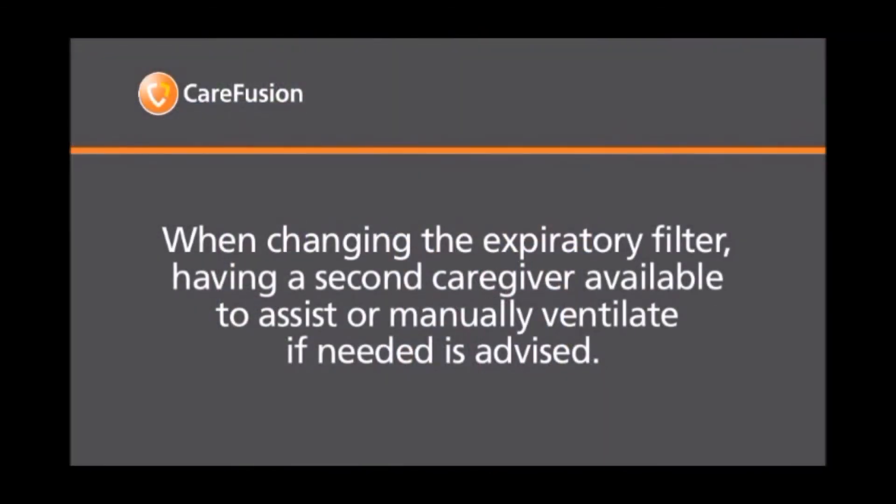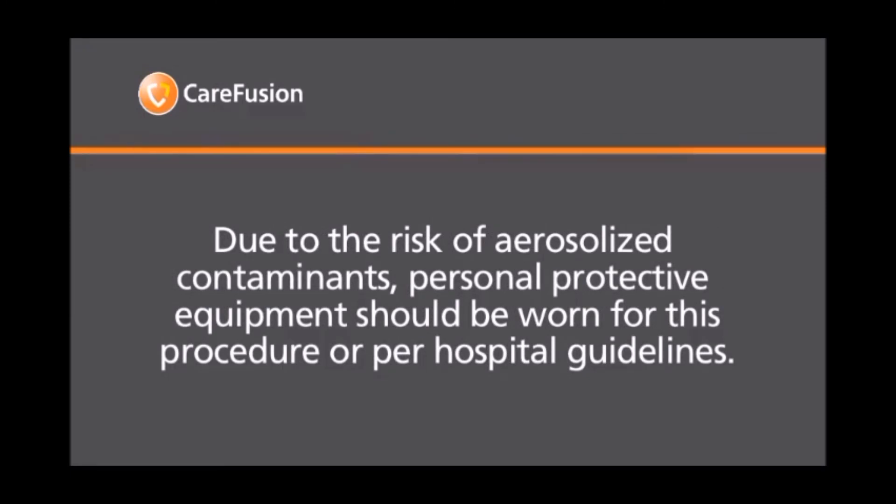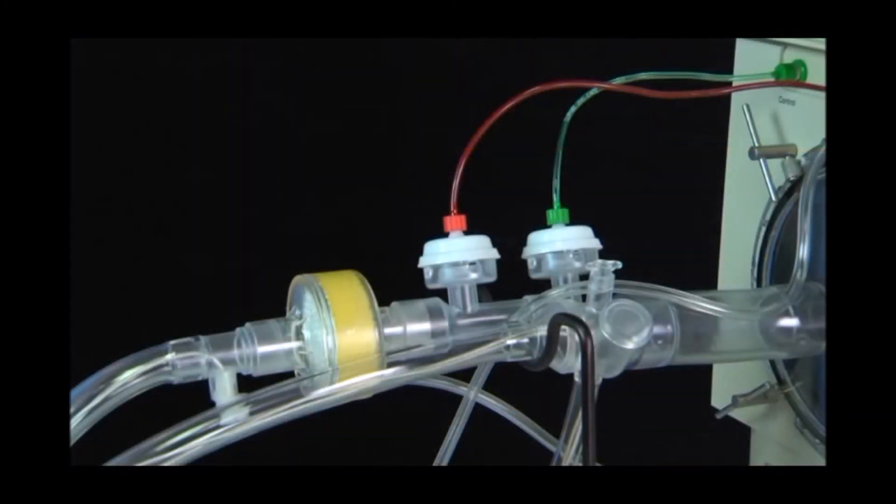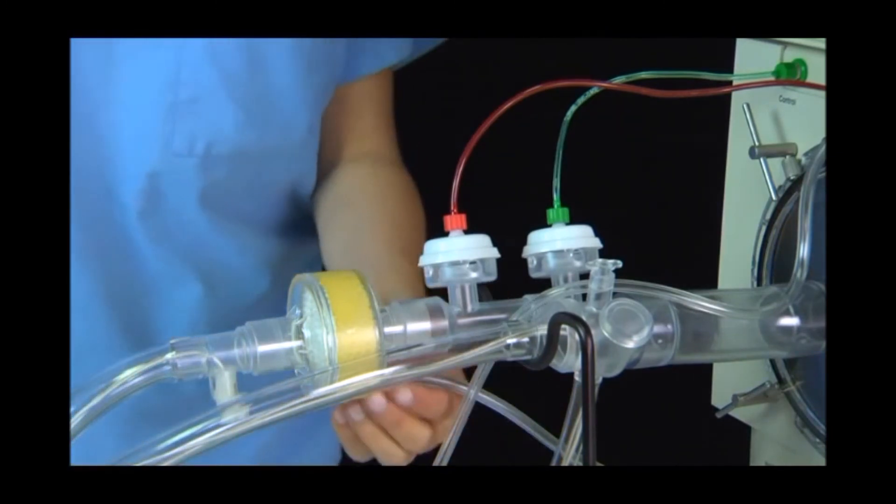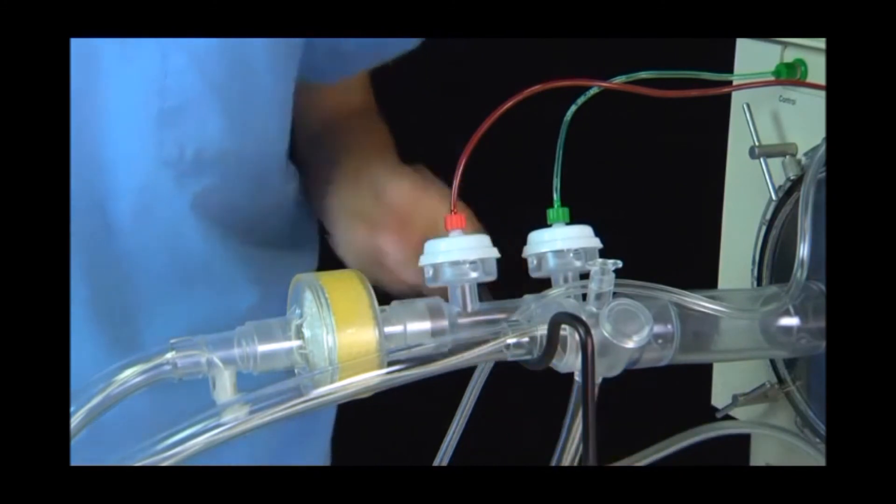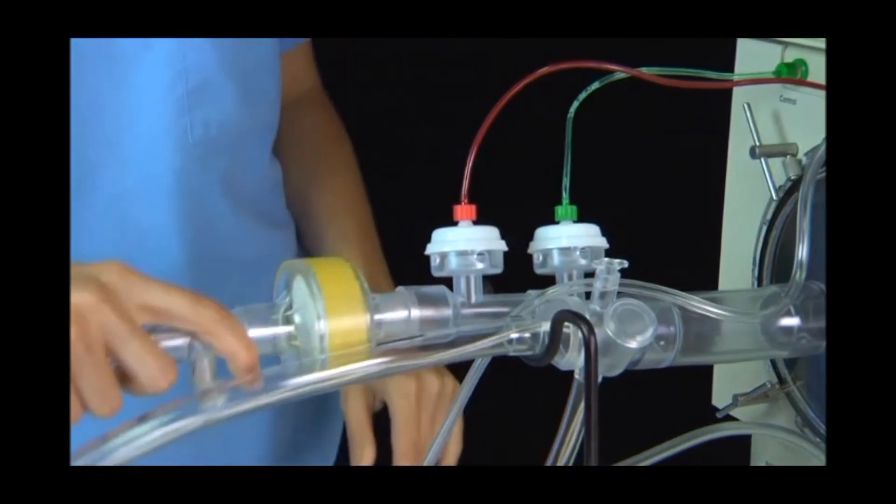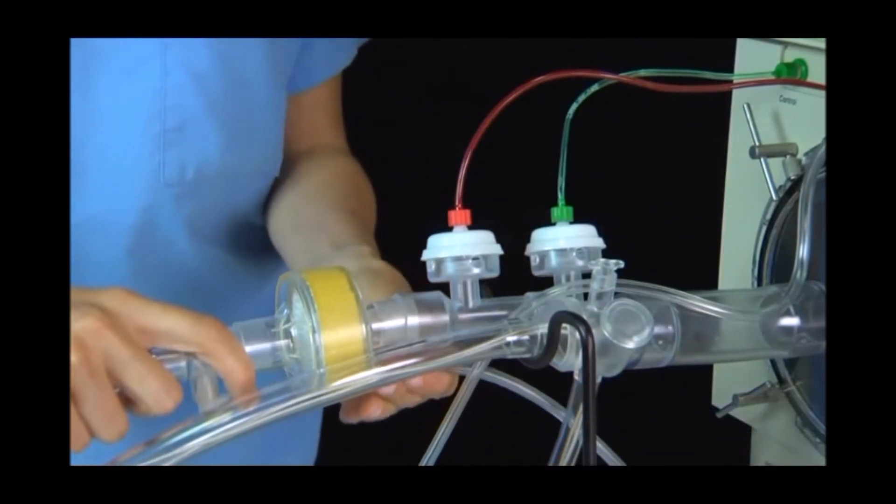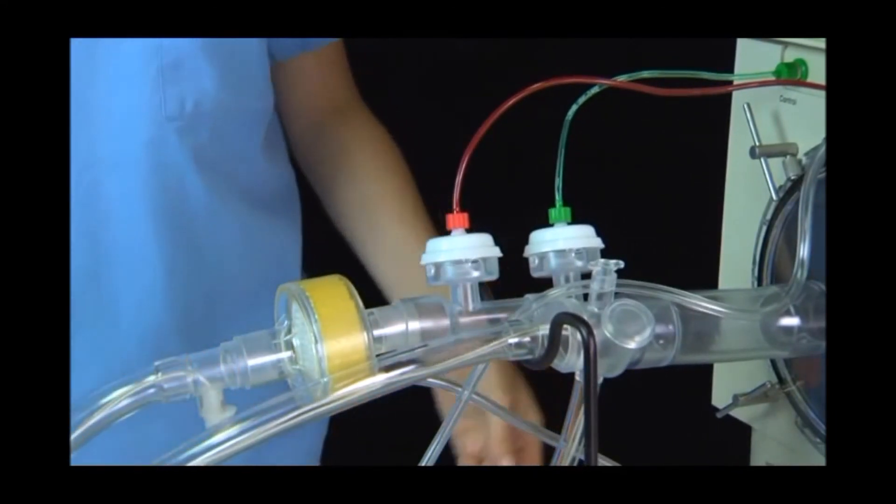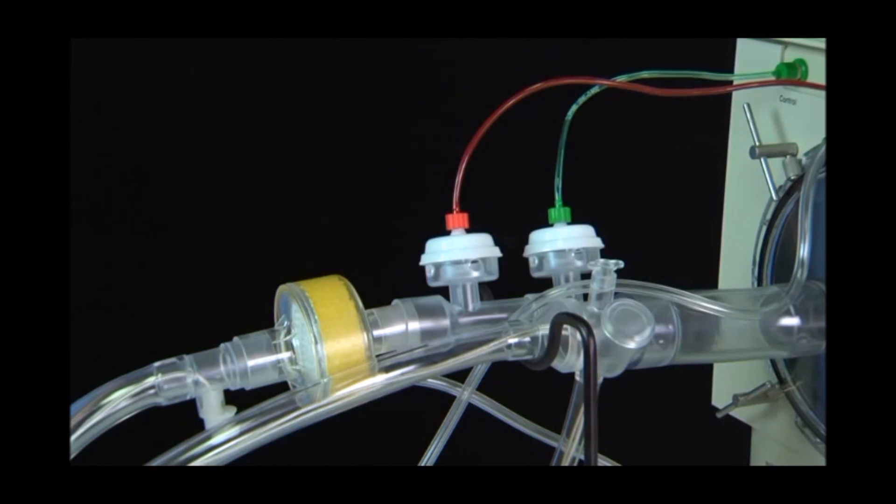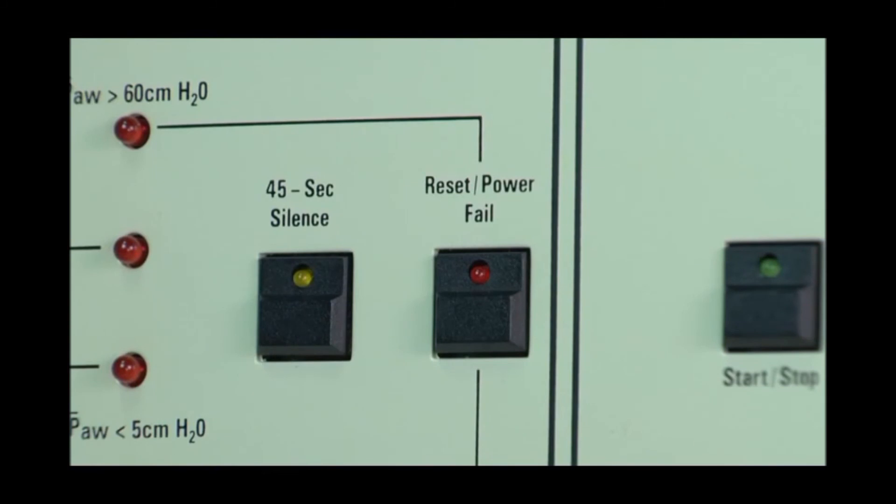When changing the expiratory filter, having a second caregiver available to assist or manually ventilate if needed is advised. Due to risk of aerosolized contaminants, personal protective equipment such as gown, gloves, masks, etc. should be worn for this procedure or per hospital guidelines. Prepare the new filter by removing it from its packaging and place in an accessible place such as on top of the 3100 or a bedside tray. Disconnect the water trap drain tubing from the lure fitting on the bottom of the filter. Carefully disengage the filter from the circuit and set aside. Place the new filter in the circuit. Reconnect the water trap drain tubing to the lure fitting on the bottom of the filter. Ensure all connections are hand snug, but do not over tighten. Reconnect patient if needed. And deep press the reset button to pressurize the circuits and resume ventilation.